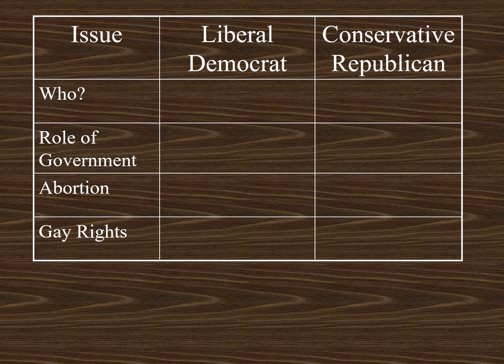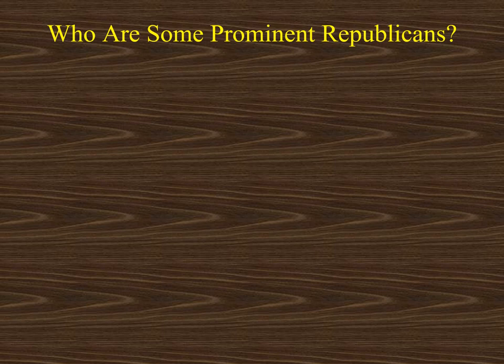The approach I'd like to take would be to fill in this chart. We'll look at who, the role of government, and then several issues. Sometimes I'm going to start with conservative Republicans, and then on the next issue I'll start with liberal Democrats, and hopefully I'll provide equal treatment to each of the parties.